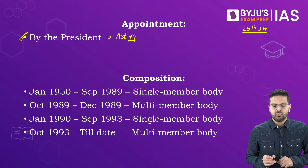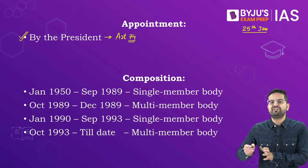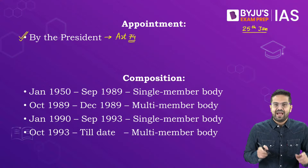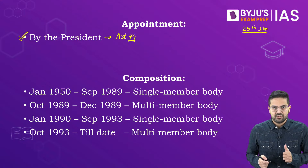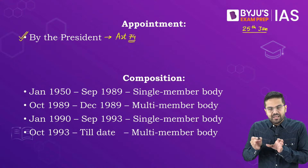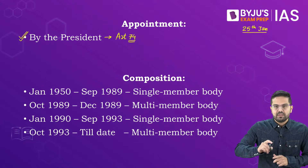From 1950 till September 1989, the Election Commission of India was a single member body. In 1989, two more people were appointed as election commissioners and the then election commissioner RVS Perisastri was made the Chief Election Commissioner. The two newly appointed commissioners were SS Dhanova and VS Segal. However, towards the end of 1989, the President through notification removed the two posts and election commission came back to being a single member body.